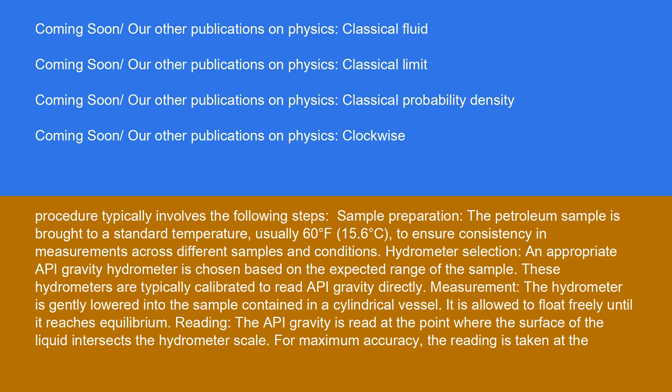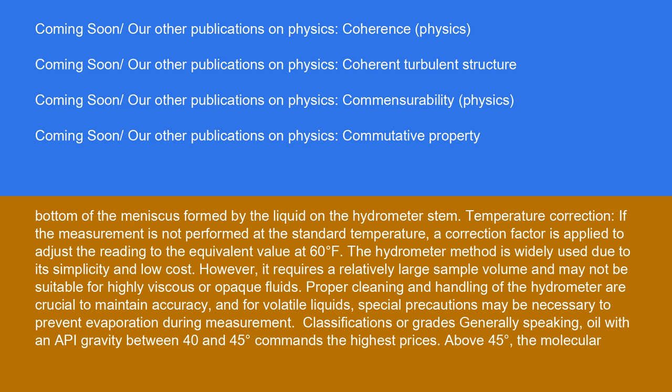Measurement: The hydrometer is gently lowered into the sample contained in a cylindrical vessel. It is allowed to float freely until it reaches equilibrium. Reading: The API gravity is read at the point where the surface of the liquid intersects the hydrometer scale. For maximum accuracy, the reading is taken at the bottom of the meniscus formed by the liquid on the hydrometer stem.